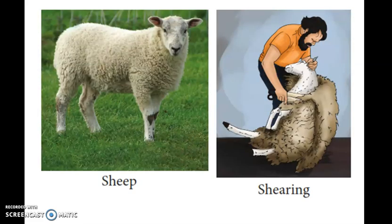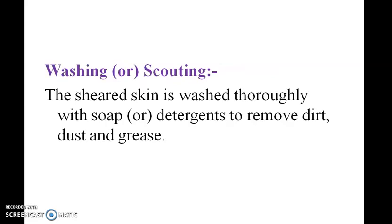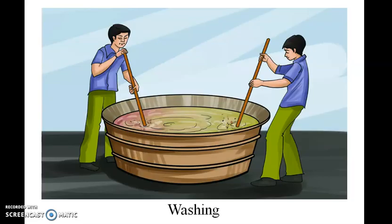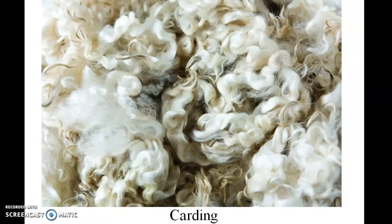After sorting, the wool is washed to remove dirt, dust, and grease. Then in carding, the dried wool is carefully combed and passed through rollers. This process arranges the wool into a flat sheet called a web.